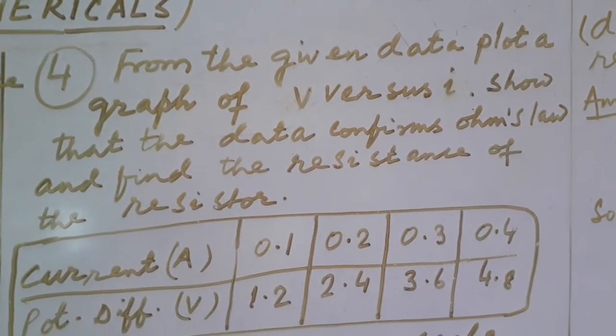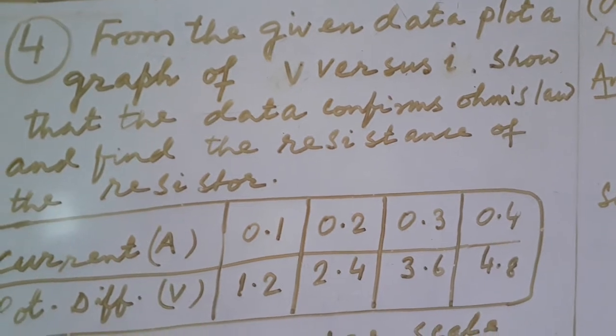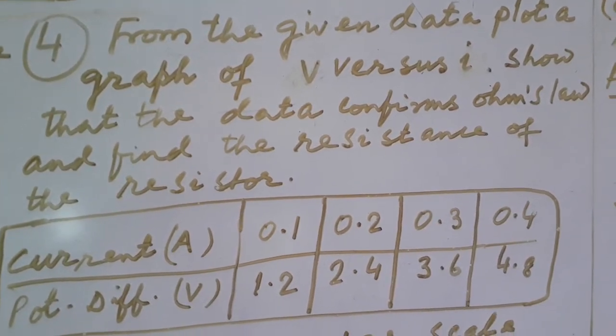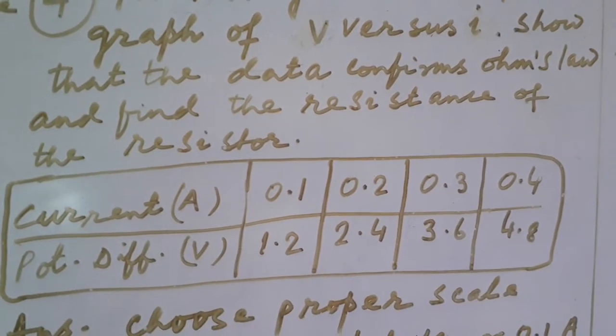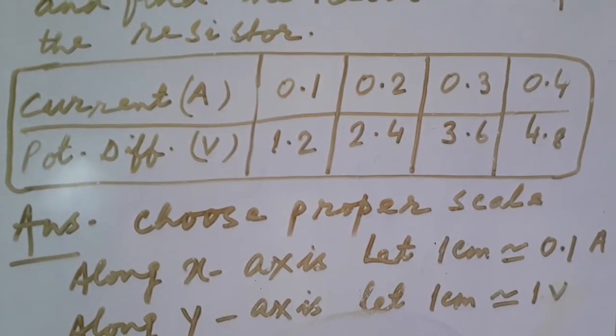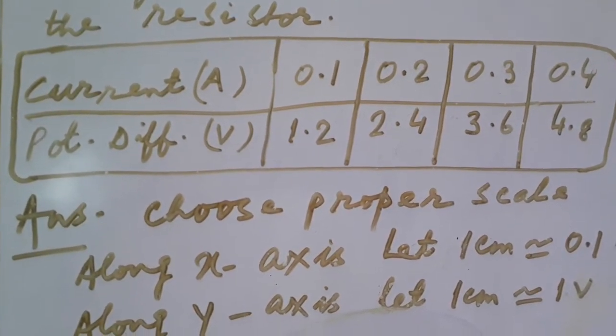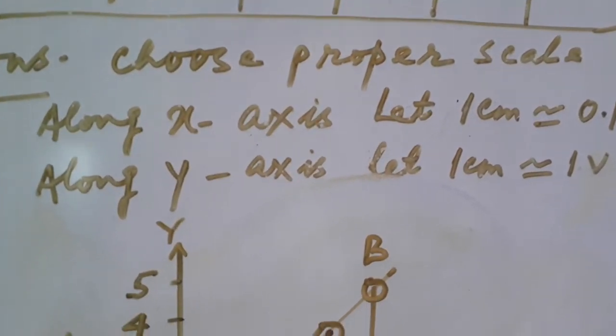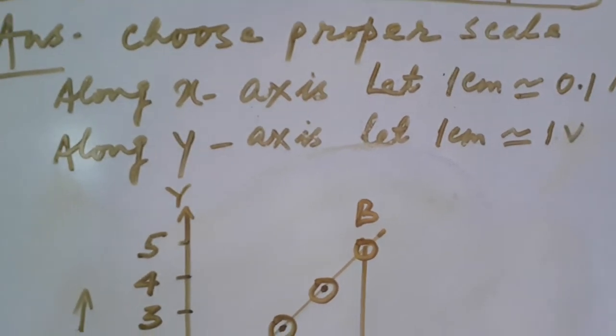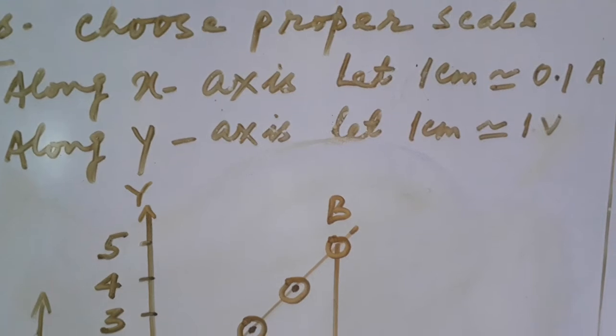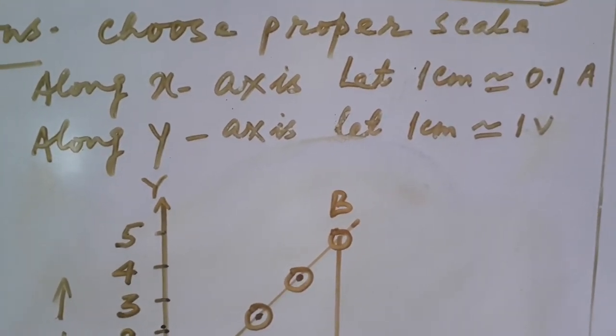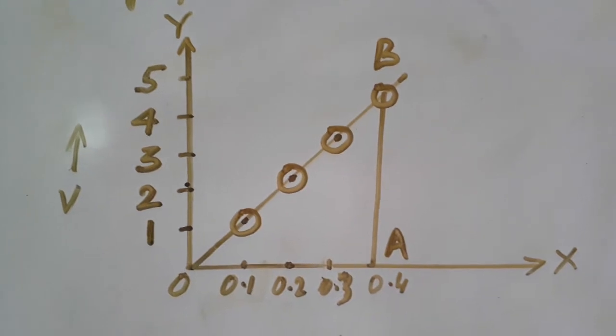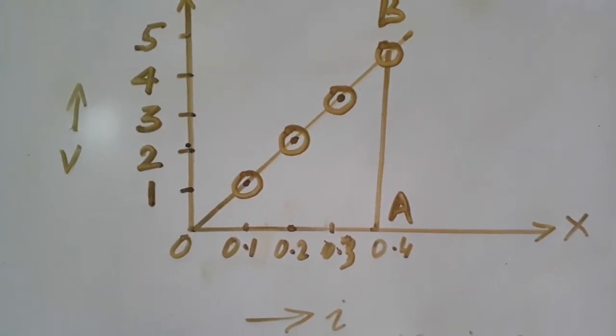Now in question number 4, from the given data, plot a graph of V versus I, show that the data confirms Ohm's law and find the resistance of the resistor. Here you can see the given data: current is given in ampere, potential difference is given in volt. Now you will have to select a proper scale to plot the graph. Let us suppose that along x-axis, 1 cm represents 0.1 ampere of current.